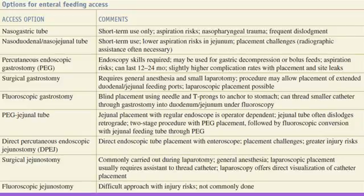PEG is usually performed by endoscopists, while surgical gastrostomy is done by the surgeon. Comparing gastric tubes and jejunal tubes, a jejunal tube is always preferable because gastroparesis and aspiration are more common with gastric tubes. Jejunal tubes are far safer and avoid the risks of aspiration and gastroparesis.